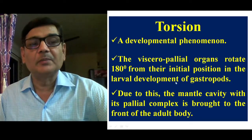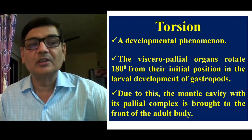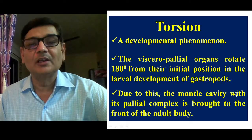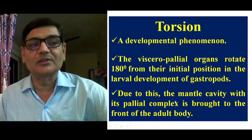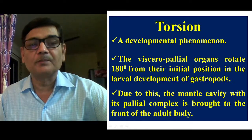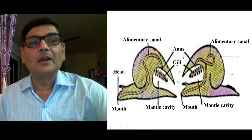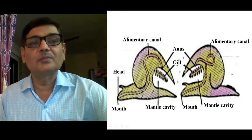Because of this torsion, the mantle cavity, which is present on the posterior side of the animal, gets shifted to the anterior side. So the mantle cavity along with its pallial complex is brought to the front of the adult body. This is the major change that occurs, and it can be understood through this diagram.